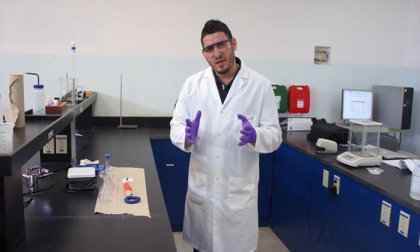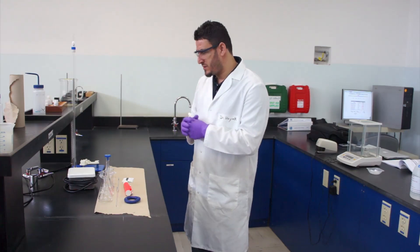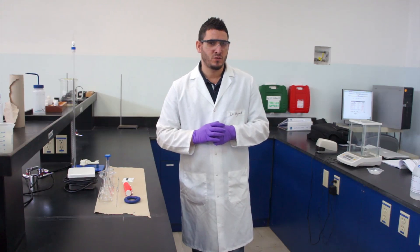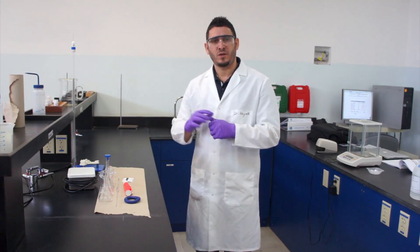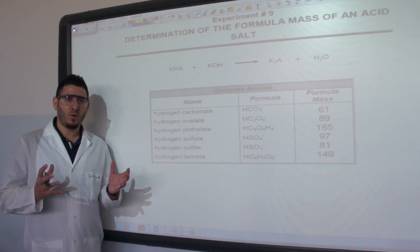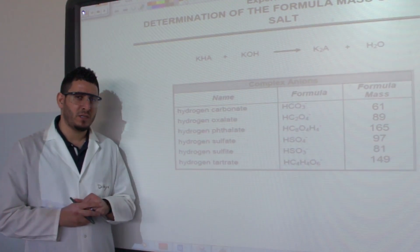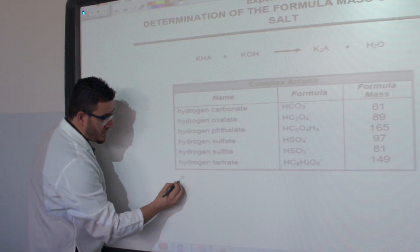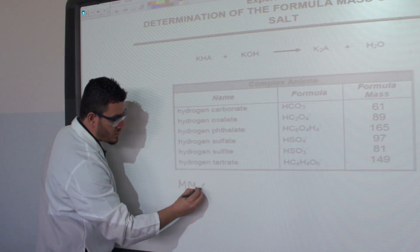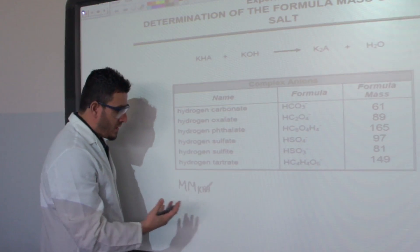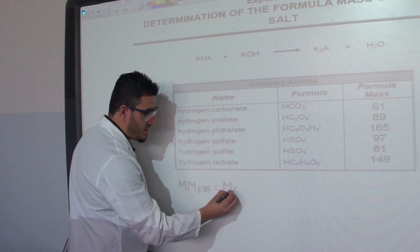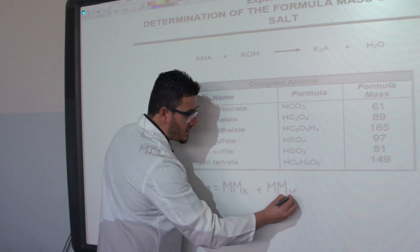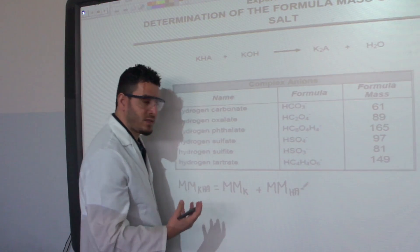In order to better understand the data we will collect from our experiment today — which is the titration — let's look at the objective and the calculations we need to carry out. To determine the formula of the acid salt in question, I can simply figure out its molar mass. The molar mass of KHA equals the atomic mass of potassium plus the molar mass of the conjugate base forming this acid salt.